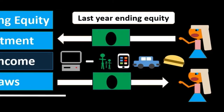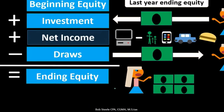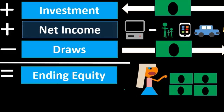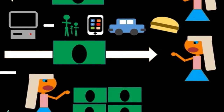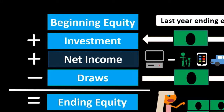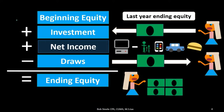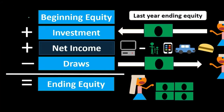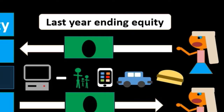Then we decrease this amount by draws — the amount the owner has drawn out of the company for personal use. In a corporation it would be similar to dividends, the amount distributed to shareholders for their personal use. That gives us our ending balance, which represents what is owed or contributed to the owner — the book value of the company. Think of it as: if we sold all the assets for exactly their book value and paid off all the liabilities, what would be left over.